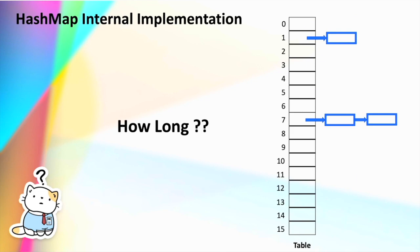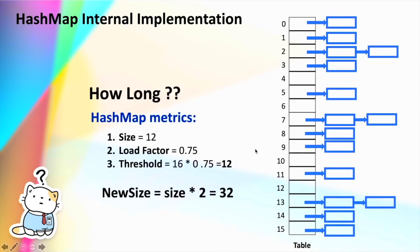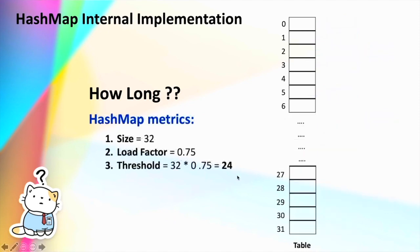Since we never define a size when declaring a HashMap, how long can we insert data? As discussed, the HashMap allows insertion until it reaches the threshold value. As soon as the total number of elements reaches the threshold, the HashMap internally doubles its size. So initially the size was 16 — now it doubles to 32. The array of nodes grows from size 16 to size 32, and the new threshold value is recalculated accordingly.